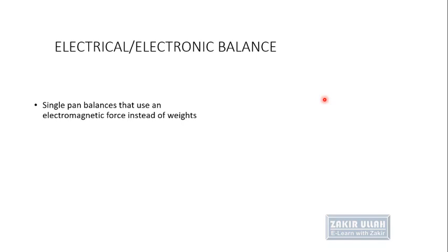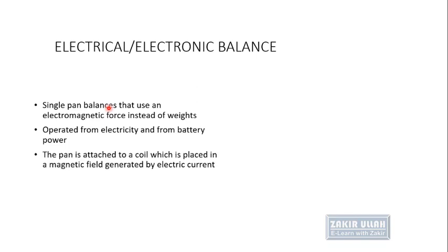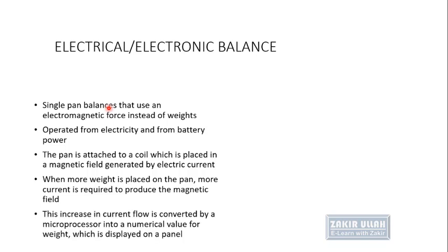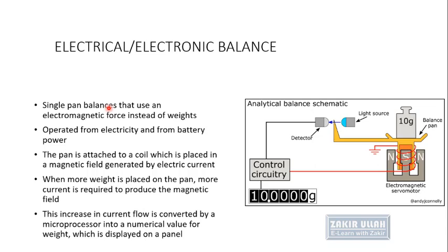The different types of electrical or electronic balances mostly have a single pan that uses electromagnetic force instead of weights, operated with electricity or battery power. The pan is attached to a coil placed in a magnetic field generated by electric current. When weight is placed on the pan, an electromagnetic field is generated; more weight produces a stronger field. The increase in current flow is converted by a microprocessor installed inside the electronic balance, and it gives a numerical value of the weight displayed on the panel.